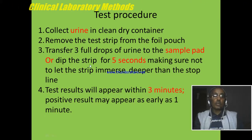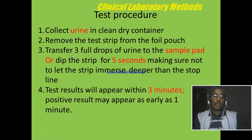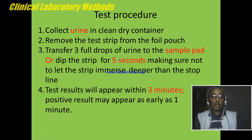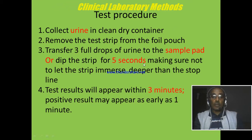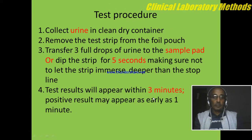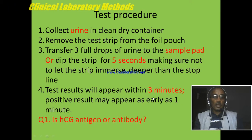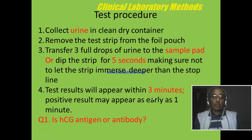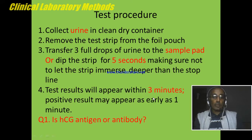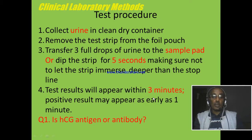Test procedure: We collect urine in a clean dry container. We remove the test strip and apply the sample by dropping onto the sample pad, or we can immerse or dip the strip into the urine for five seconds. The test result will appear within three minutes. Summary question: Is HCG an antigen or antibody test? This is an antigen test, because the antibody is coated on the strip and the hormone present in the urine attaches to the antibody.